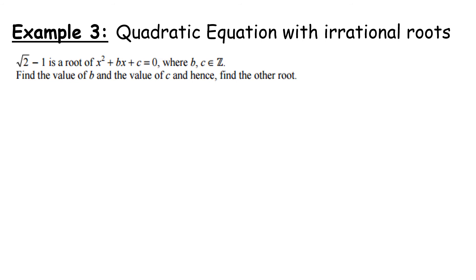Example 3. Let's look at what happens when we're given the irrational root and how we can work with that. √2 - 1 is a root of x² + bx + c = 0, where b and c are elements of ℤ, so they're integers. The first thing we want to do is to find the value of b, then the value of c, and hence find the other root. So roots can get confusing when we have irrational roots. Just remember that all roots can be written as x = √2 - 1. If we have a root of any kind of equation or function, subbing it in should make the function equal 0, or in this case, the equation should balance. So I'm going to sub that in. So I get (√2 - 1)² + b(√2 - 1) + c = 0.